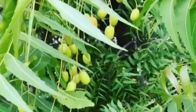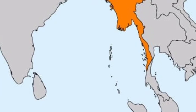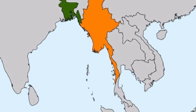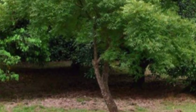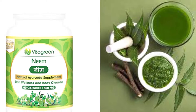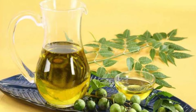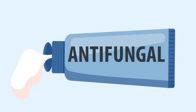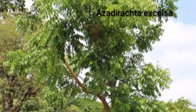Azadirecta indica is also known as Indian neem and is considered to be native to India, Sri Lanka, Bangladesh, and Myanmar. It is a medium to large deep-rooted evergreen perennial tree, 15 to 30 meters tall, and mostly propagated through seeds. It is one of the most important detoxicants in Ayurvedic medicine, and oil extracted from the seed is strongly antifungal, anthelmintic, antiseptic, and purgative.